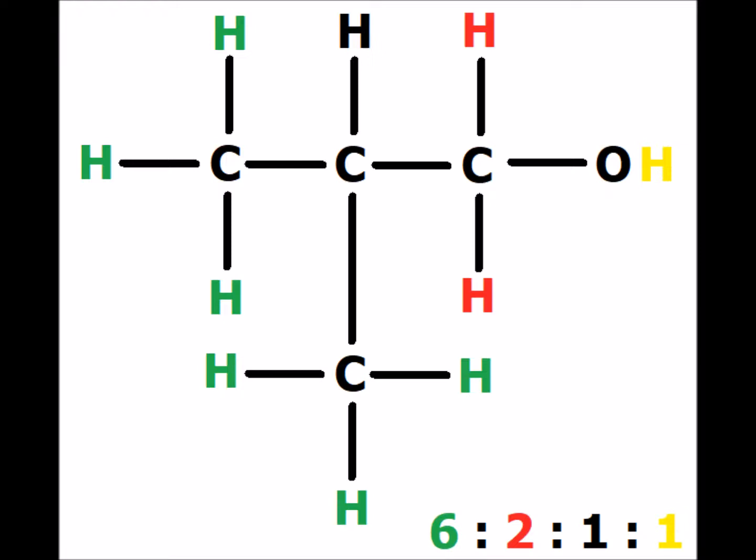In 2-methyl-1-propanol, we have four different signals. One is the yellow hydroxyl hydrogen, recognizable as a singlet. There are two red hydrogens directly attached to the alpha carbon — our clue that we are dealing with a primary alcohol. We have one hydrogen shown in black attached to the second carbon of the chain, and six green methyl hydrogens which are symmetry equivalent due to rotation about the carbon-carbon bond, interchanging the two methyl groups. The relative ratios are 6 to 2 to 1 to 1.